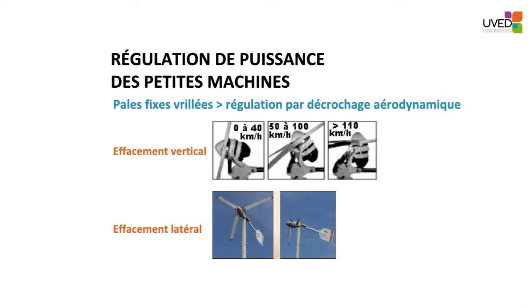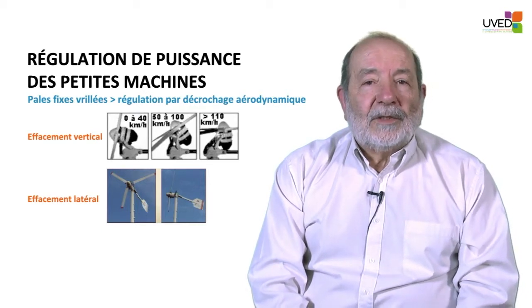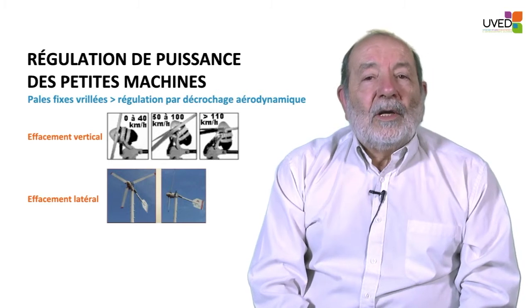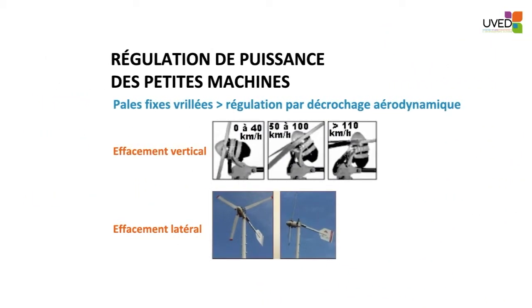Small windmills with small blades do not have this kind of system. They are regulated by aerodynamic stalling. The blade is designed so that above a certain wind velocity, lift will decrease and this will reduce the revolution speed. If the wind is very strong, the small windmill will pitch laterally or horizontally to decrease contact with the wind.